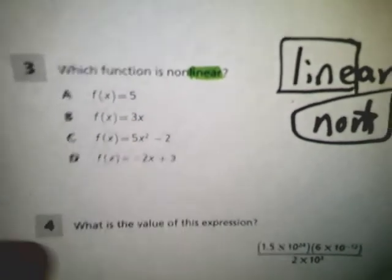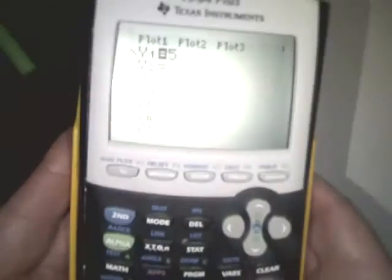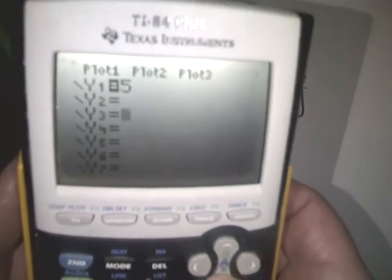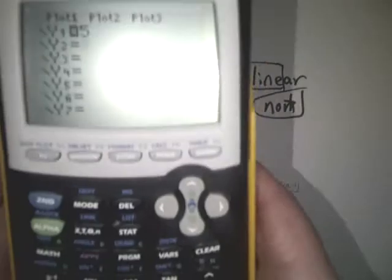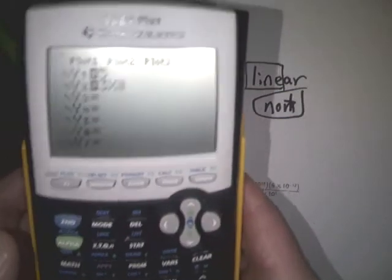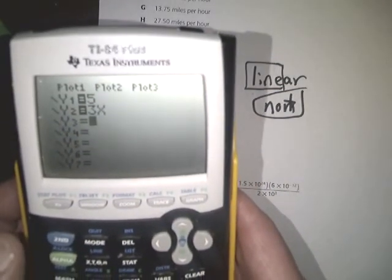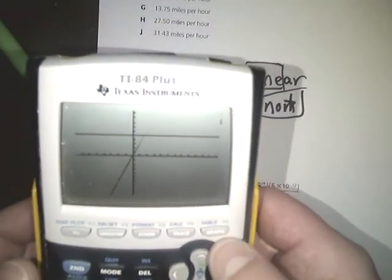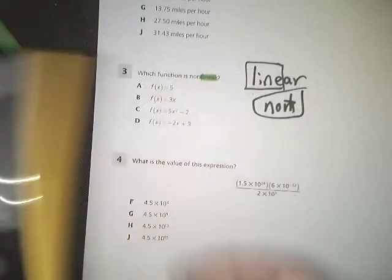Now the next one says f of x is equal to 3x. So I go into the y equals. Type in 3x. And I graph it. Look, a line. So it's not 3x.